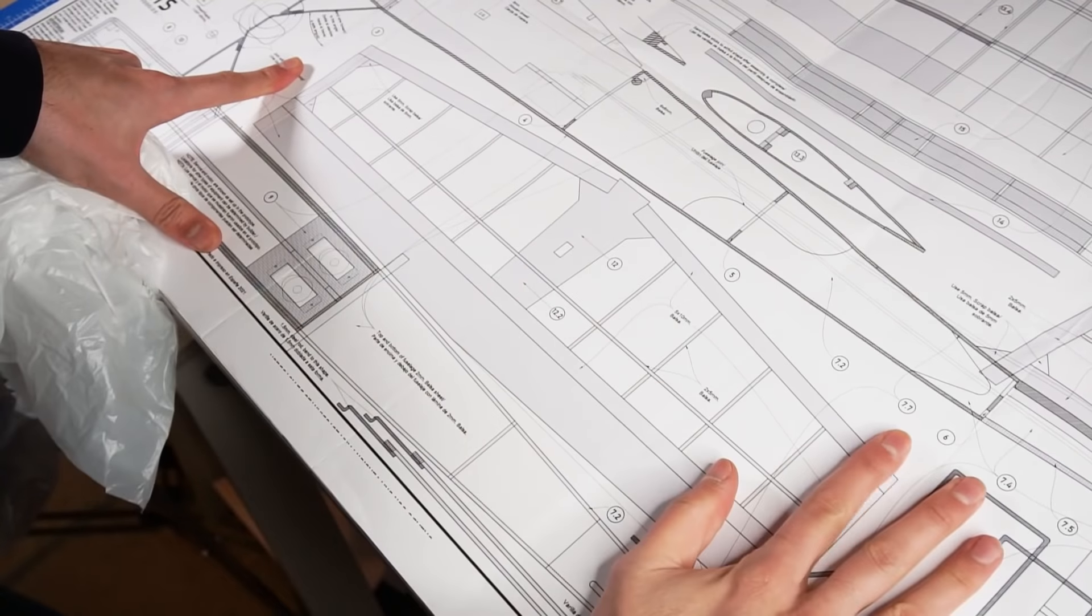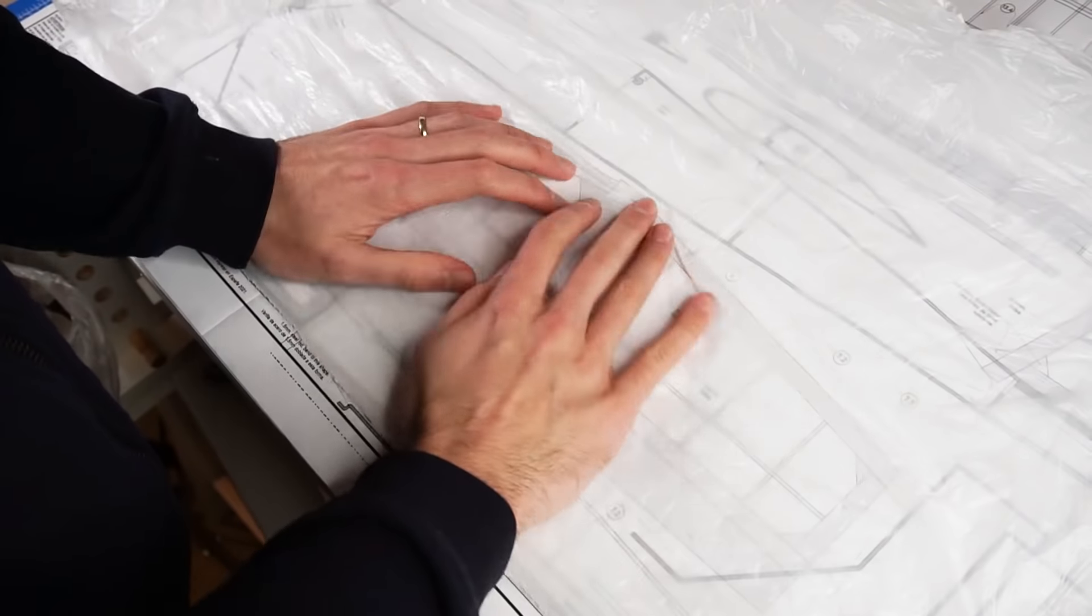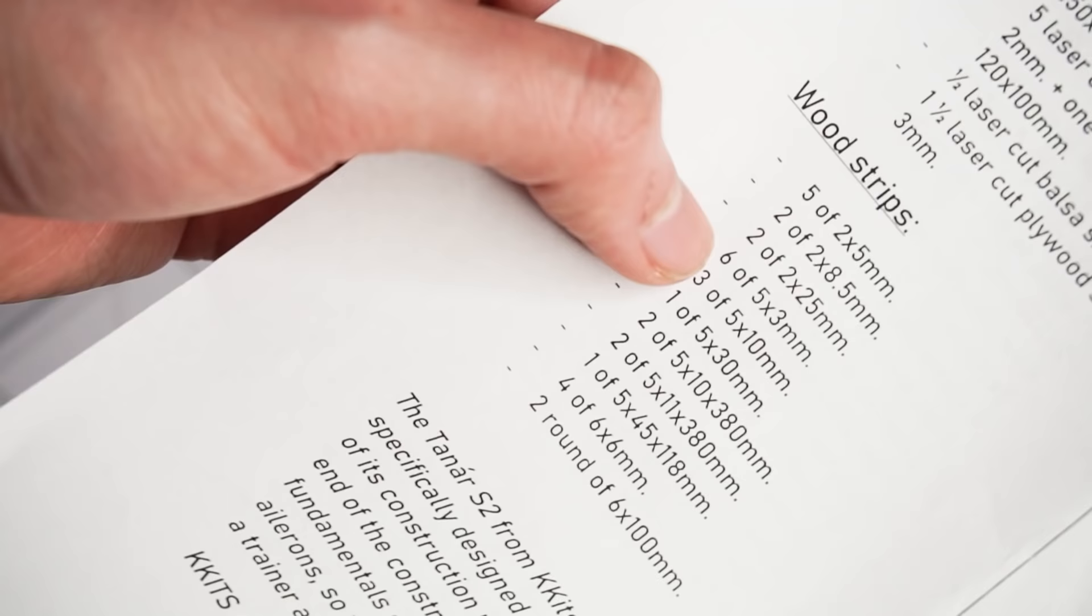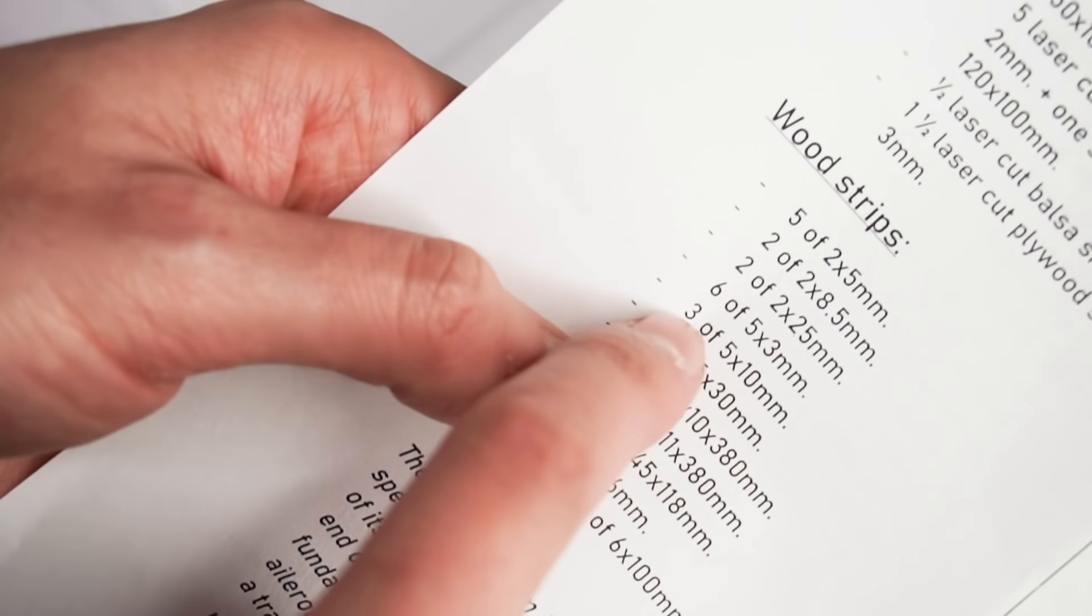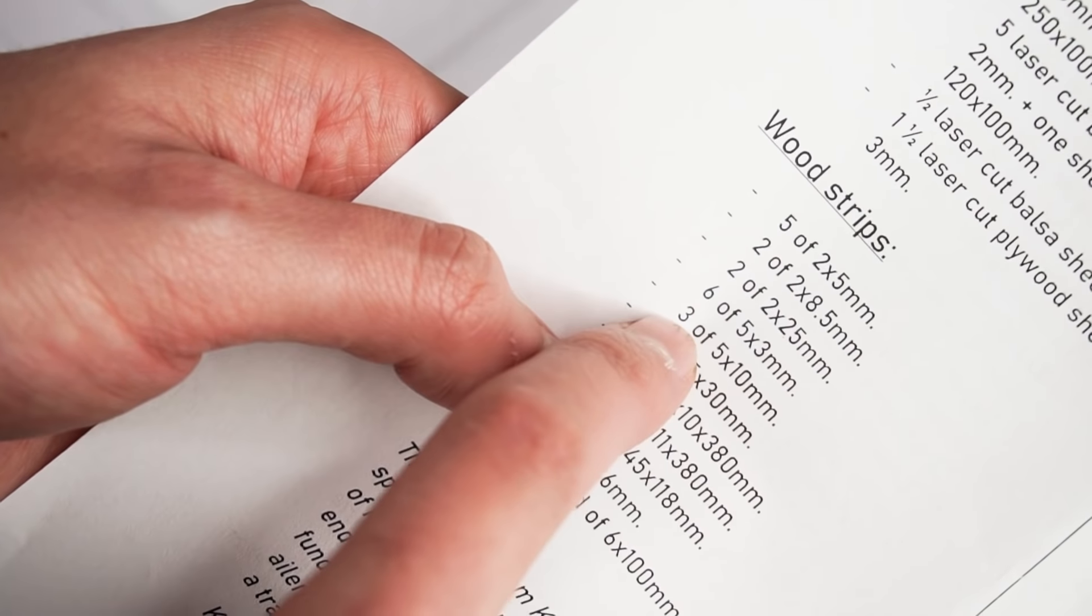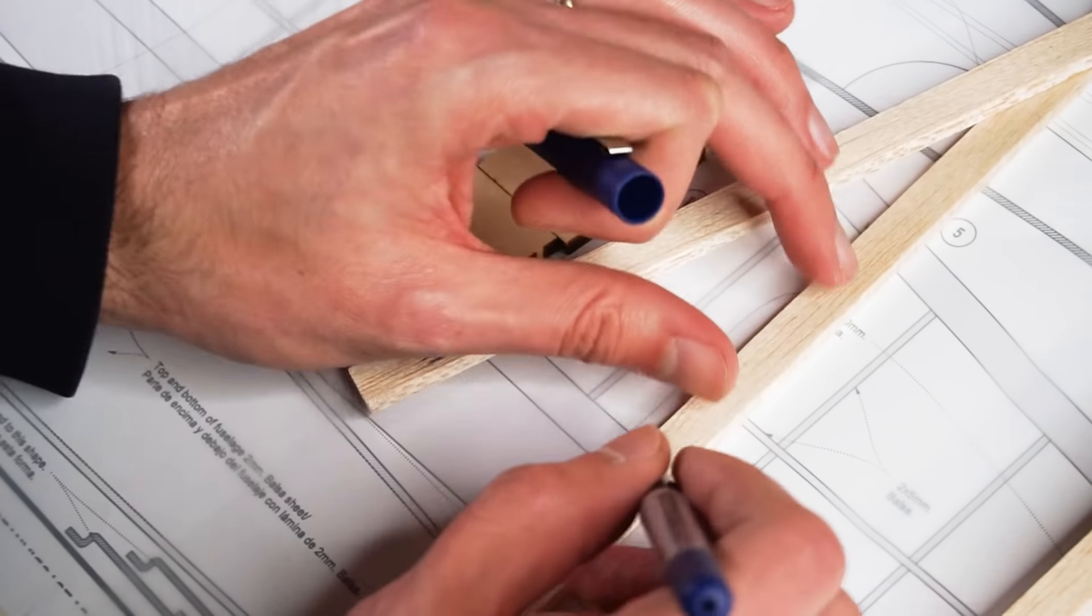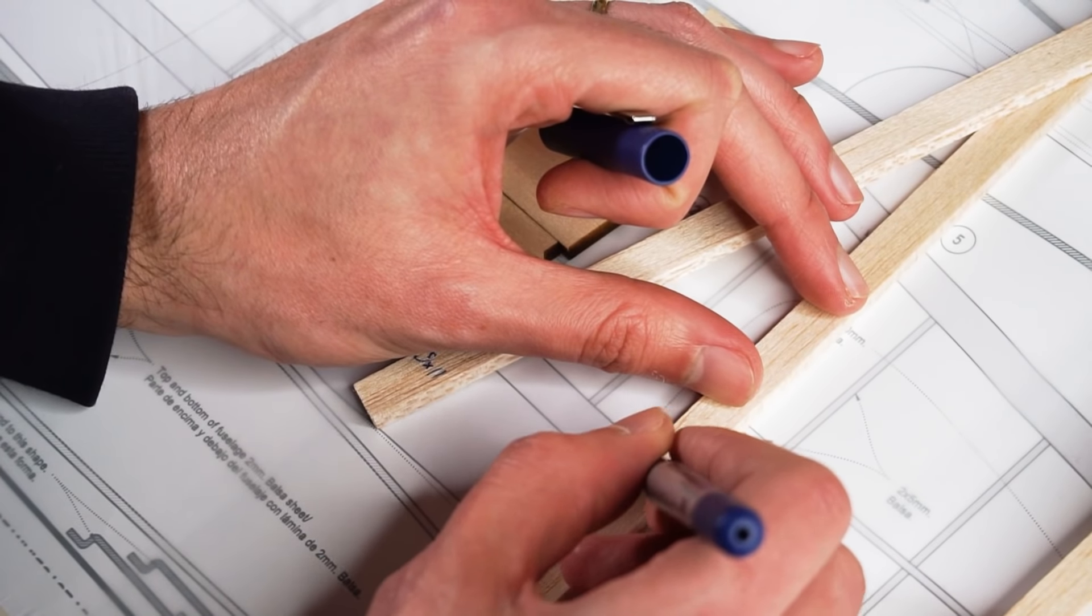I'm going to start building the horizontal and vertical stabilizers, and then I'm going to move on to the wings. The kit comes with a lot of balsa wood strips of different sizes. So it's a good idea to measure them and make sure we're using the right ones, especially because some of them are very similar.